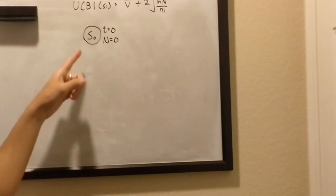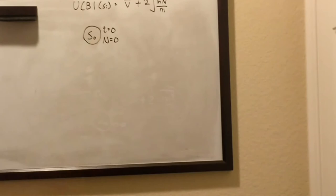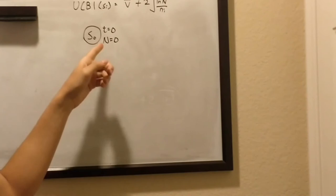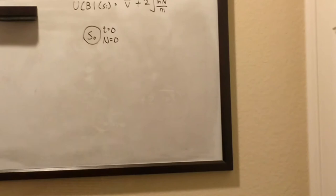At the very start of the game, we start at state 0, and right now we have t equals 0, which is the total return on values, and then we have n equals 0, which is the total number of times we visited the state.